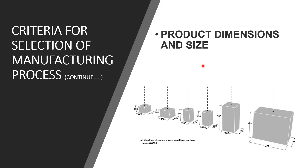Product dimensions, size, and shape have a major impact on manufacturing process selection. For example, if we want to do machining on a cylindrical bar with a 100 cm diameter, but the lathe machine available can only hold a workpiece with a maximum of 80 cm diameter, it is not possible to perform the machining operation on that machine. So before selecting a process, we need to consider the product's dimensions and size.